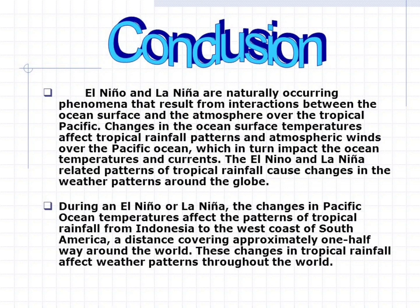Conclusion: El Niño and La Niña are naturally occurring phenomena that result from interactions between the ocean surface and the atmosphere over the tropical Pacific. Changes in ocean surface temperatures affect tropical rainfall patterns and atmospheric winds over the Pacific Ocean, which in turn impact ocean temperatures and currents. The El Niño and La Niña related patterns of tropical rainfall cause changes in weather patterns around the globe. During an El Niño or La Niña, changes in Pacific Ocean temperatures affect tropical rainfall patterns from Indonesia to the west coast of South America — a distance covering approximately halfway around the world — affecting weather patterns throughout the world.